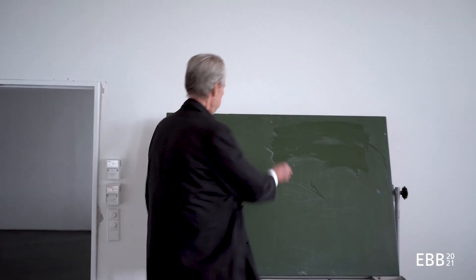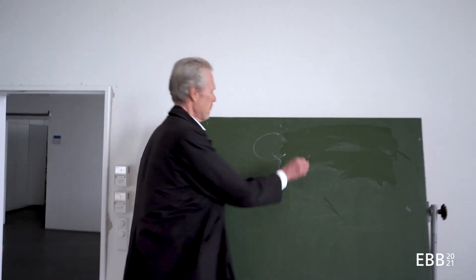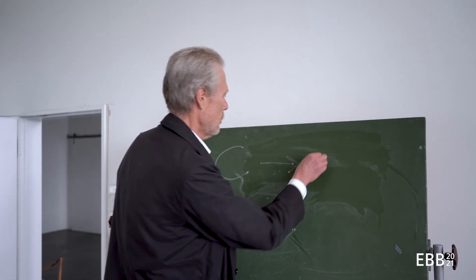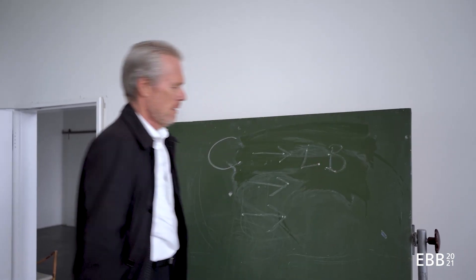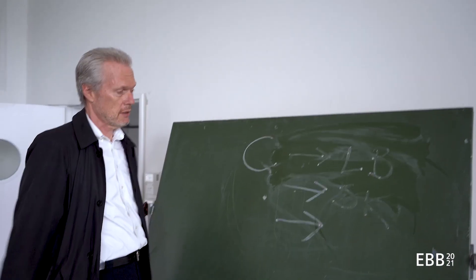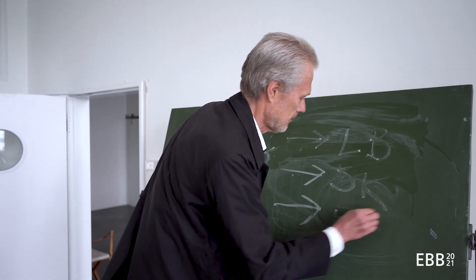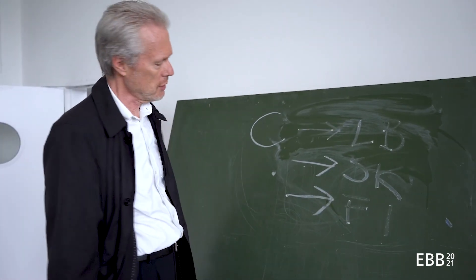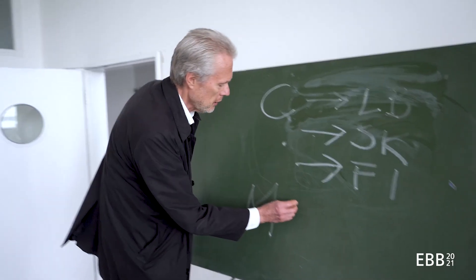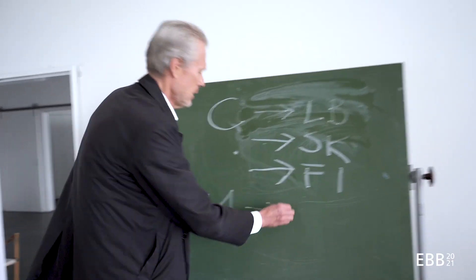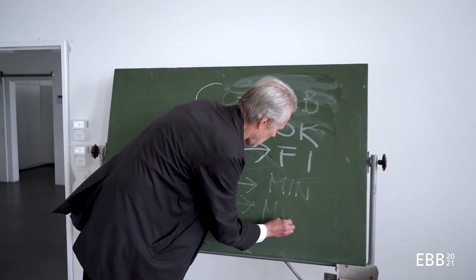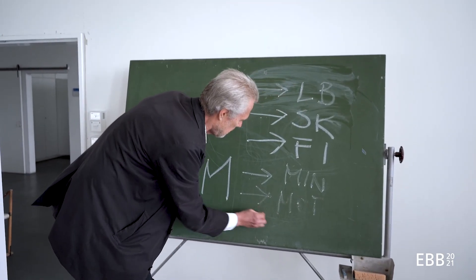Construction is divided into three categories: one being the load-bearing structure, second being the skin of the building, and third being the finishes. To construct these we need materials, which also fall into three big categories: one being minerals, second being metals, and the third being organic.